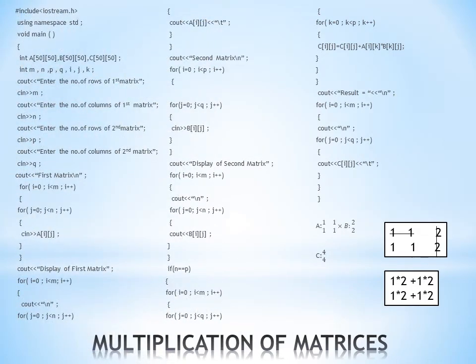Next is matrix multiplication. We enter the number of rows and columns of both matrices. There is a condition for multiplication: the Nth column of the first matrix must equal the Pth row of the second matrix. The first matrix is denoted M×N and the second matrix is P×Q, so the condition is that N must equal P.